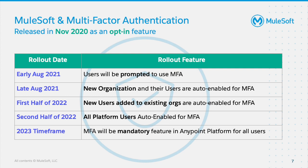MFA was first released by MuleSoft in November 2020 as an opt-in feature. Starting August 2021, users will be prompted to use MFA. By late August 2021, all new organizations created and users invited will be automatically MFA-enabled. In the first half of 2022, any new user added to an existing organization will be auto-enabled for MFA. By the end of 2022, all platform users will be enabled for MFA. In the 2023 timeframe, multi-factor authentication will be a mandatory feature in Anypoint platform for all users.